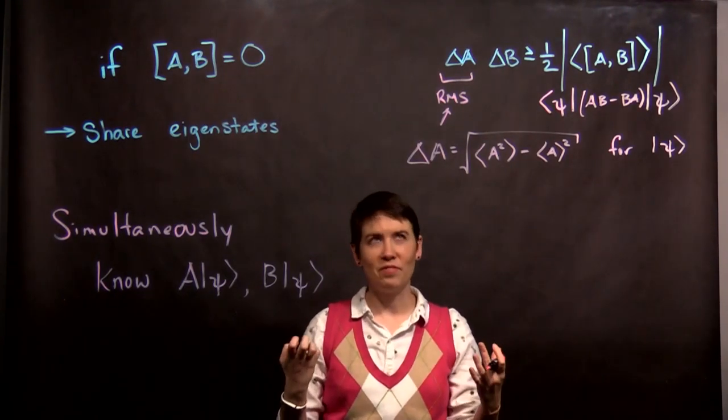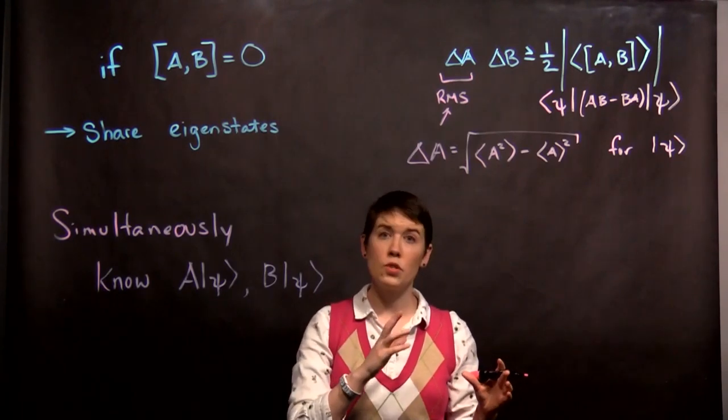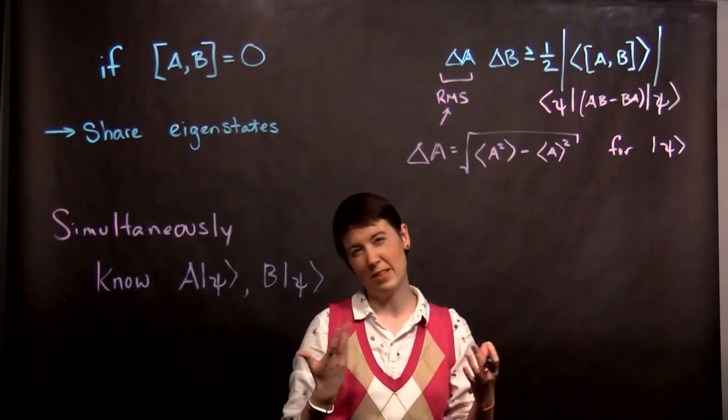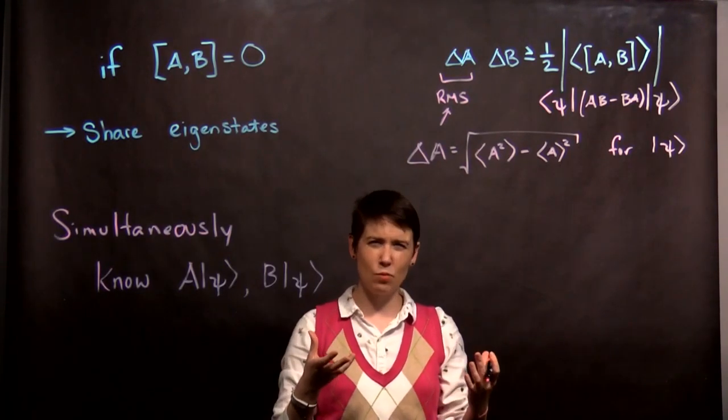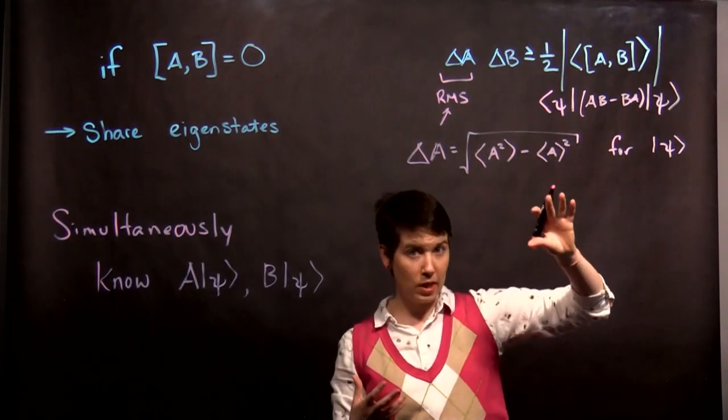So the classic, well, not classic example meaning classical, but the most common example used for the uncertainty principle is position and velocity, or position and momentum is really how we talk about it. Now notice that when we're talking about spin, we're not talking about position or momentum.